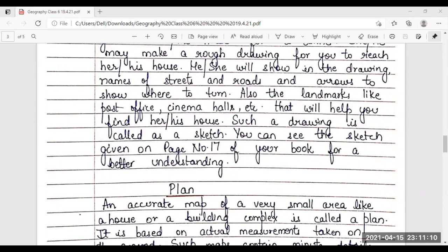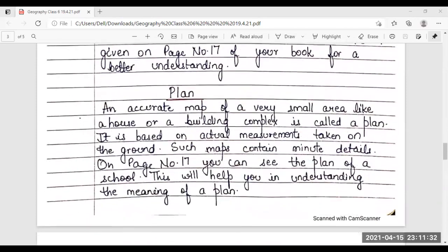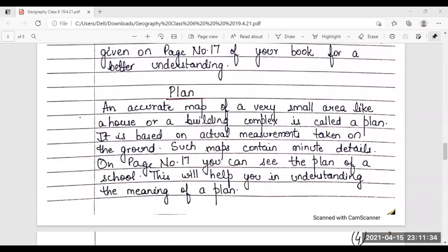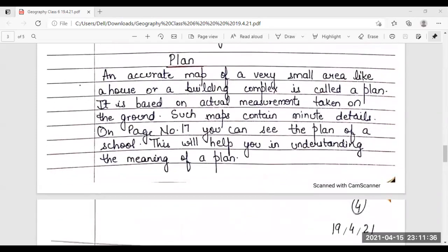Also, the landmarks like post office, cinema halls, etc. that will help you find her or his house. Such a drawing is called a sketch. You can see the sketch given on page number 17 of your book for a better understanding.